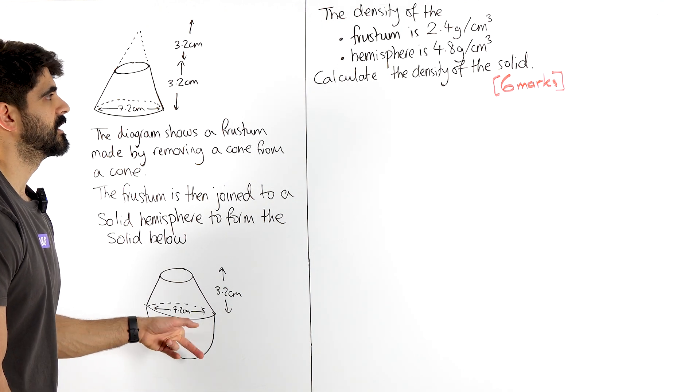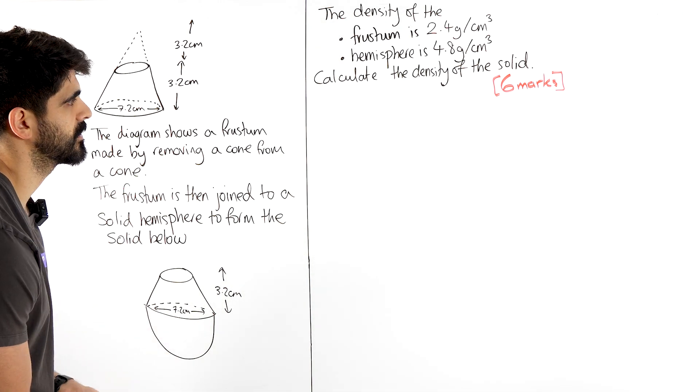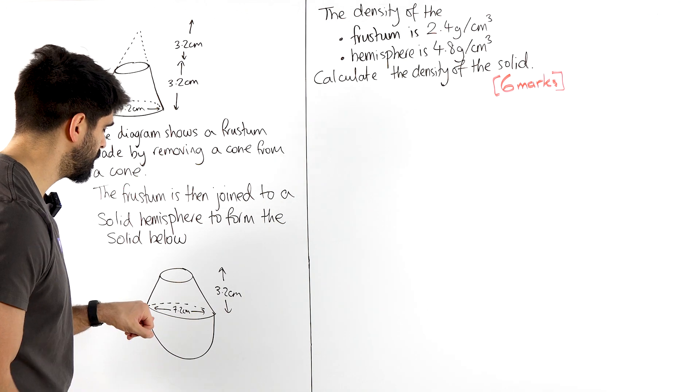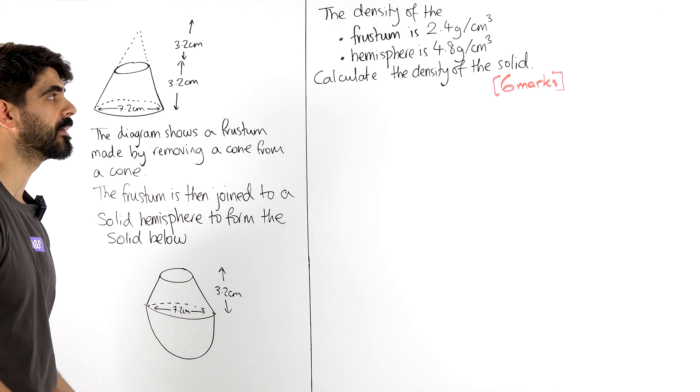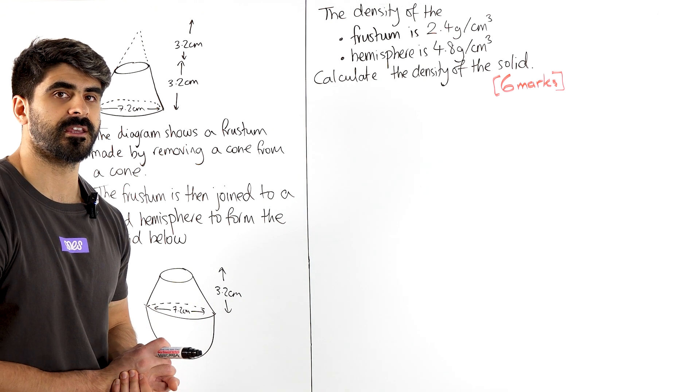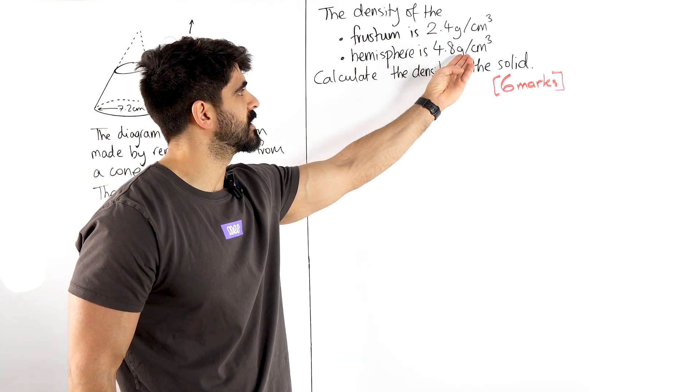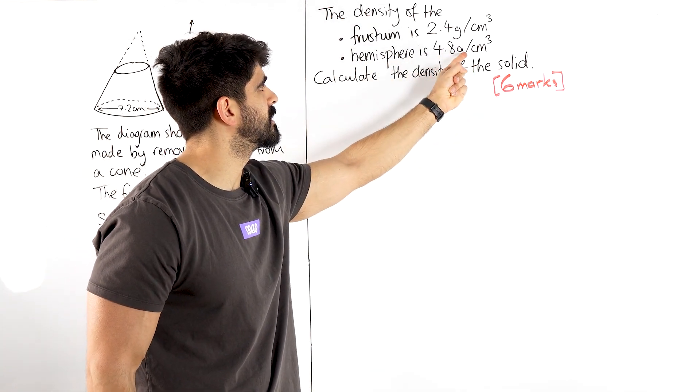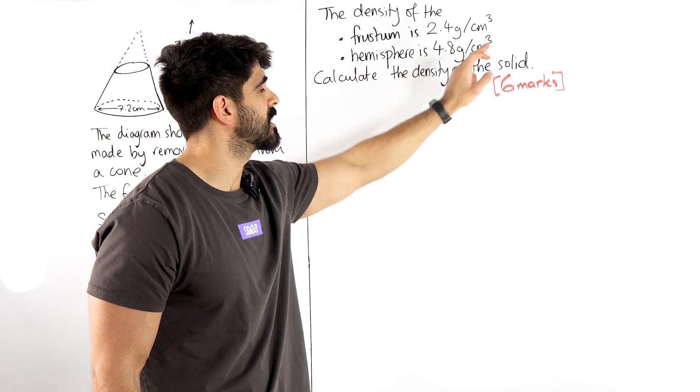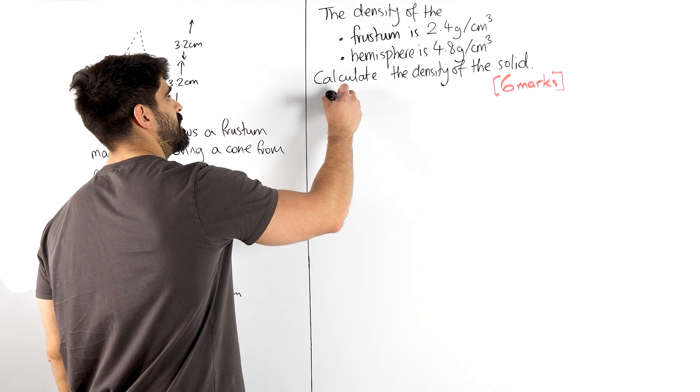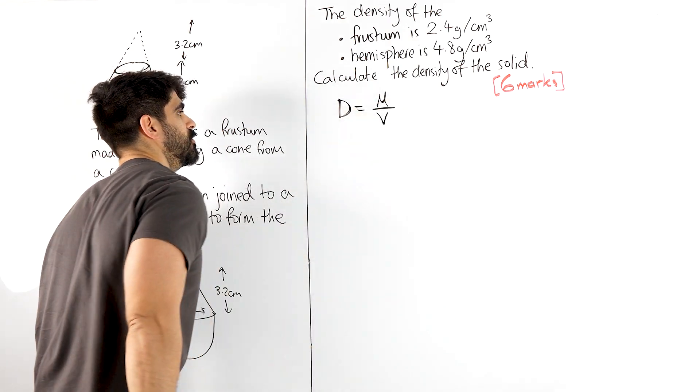Well, to calculate the density of a solid we first need to write down what the formula is. Let's just take things step by step. If you ever forget the formula, just look at the units. It says it right here. Density is grams divided by centimeters cubed. Grams is the mass, centimeters cubed is the volume. So the density of an object is the mass divided by volume.